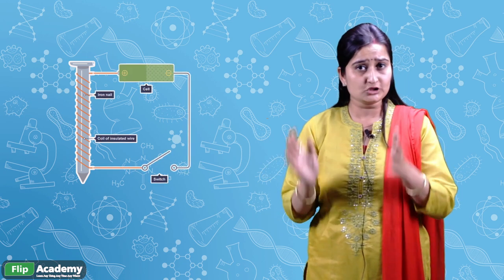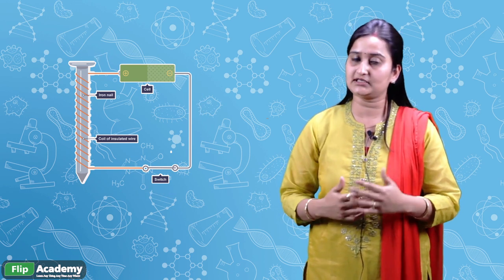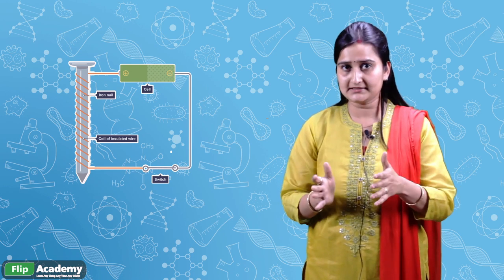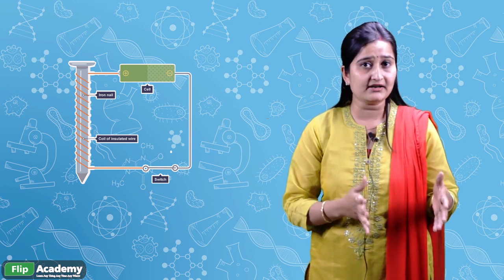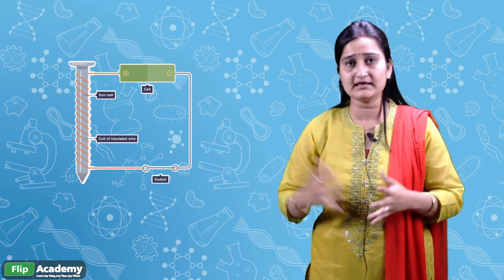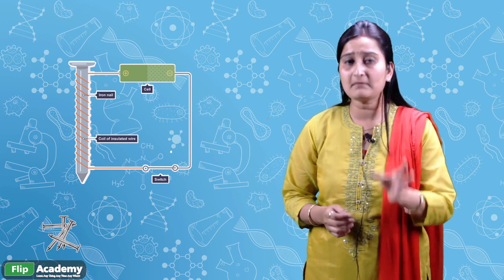We took an iron nail — iron nail is basically a conductor. Around the iron nail, we wound a copper wire, and connected both ends of that copper wire to a battery. As soon as the copper wire is connected to the battery, current starts flowing through it. The copper wire creates a magnetic effect around it, and this magnetic effect causes the iron nail to also behave as a magnet.